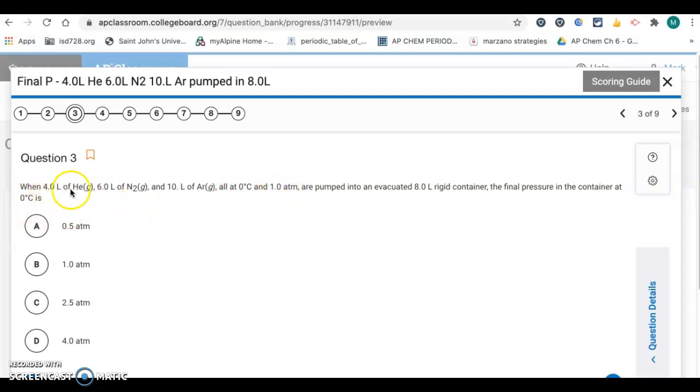So we don't have to worry about the temperature. The temperature is staying the same. It's at zero, but all these gases are starting at one atmosphere. So when you have the four liters of helium, well, that's being put into an eight-liter container. So if the volume is doubling, then the pressure is going to get cut in half. So the partial pressure of helium is going to be 0.5. And then you're going six liters of nitrogen into eight. So the pressure here would go from one to 1.25, because the new volume is one and a quarter. The original volume is 0.75 of the final.